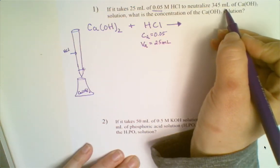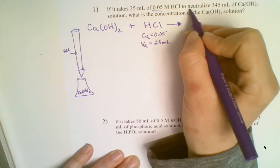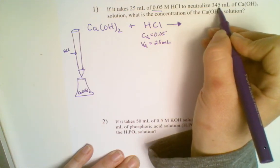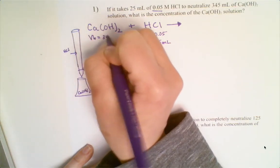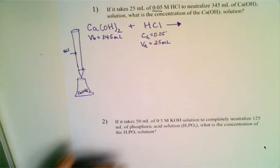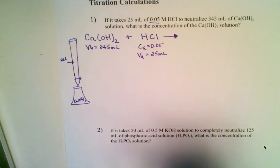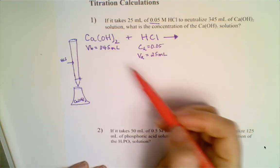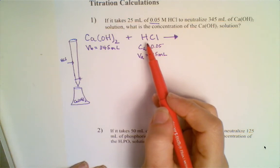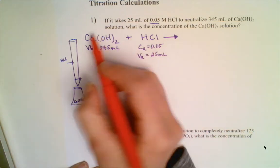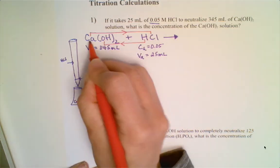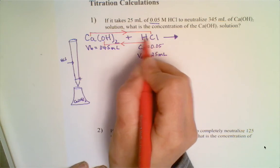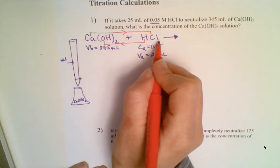The volume of base in the flask was 345 milliliters. Before moving forward, we need to write out a balanced neutralization equation. Remember that neutralization is really just a double displacement reaction — an acid plus a base always yields some sort of salt and water.